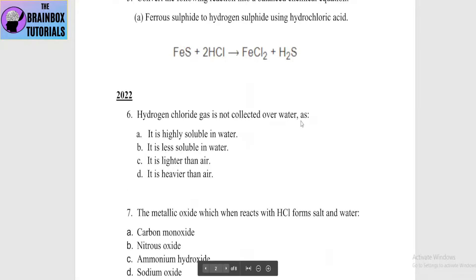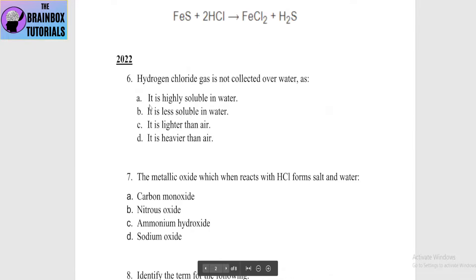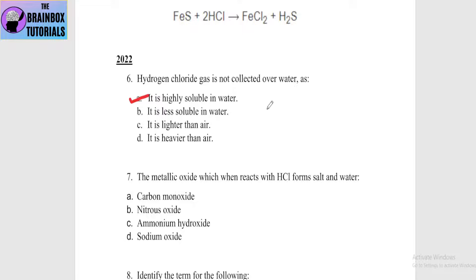In the 2022 Semester 2 exam: hydrogen chloride gas is not collected over water because — option A: it is highly soluble in water, option B: it is less soluble in water, option C: it is lighter than air, option D: it is heavier than air. The correct answer is option A — it is highly soluble in water.